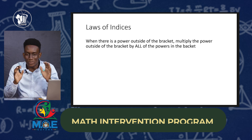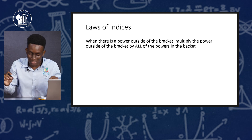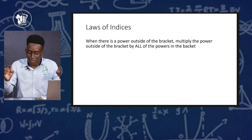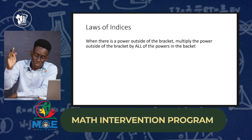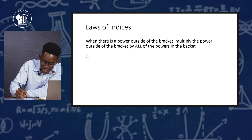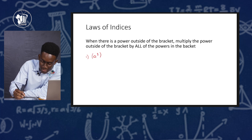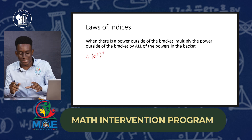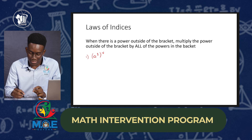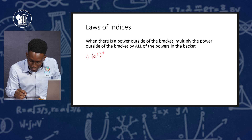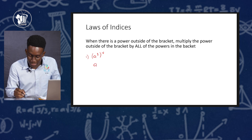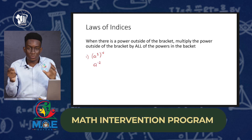So let's pick up from that and look at the next law. This law says when there is a power outside of the bracket, multiply the power outside the bracket by all the powers in the bracket. So if we have a raised to the third, all raised to the fourth power, this simplifies to a to the power of 3 times 4, which gives us a to the 12.